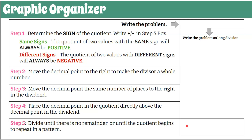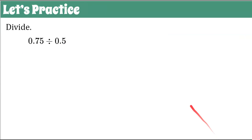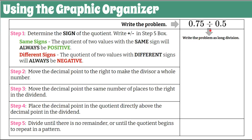Here are those steps in a graphic organizer. We're going to begin by writing our problem, then write it as long division, go through our five steps, and put our answer in the answer box. For this practice, we're asked to divide 0.75 by 0.5. We bring in our problem, write it as long division, and move to step one where we determine the sign of the quotient and record it in our step five box.